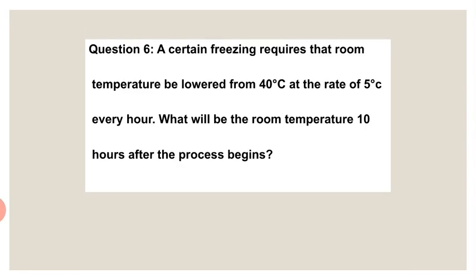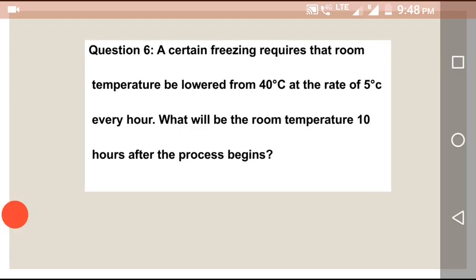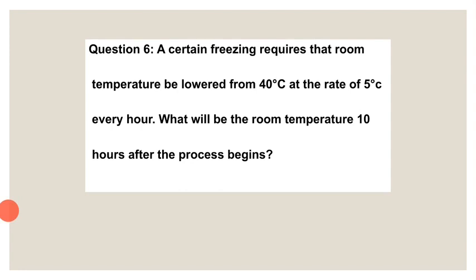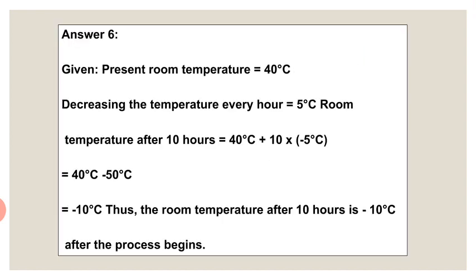Then the sixth sum: a certain freezing process requires that room temperature be lowered from 40 degrees at a rate of 5 degrees Celsius per hour. What will be the room temperature 10 hours after the process begins? You need to write the given present room temperature, the decreasing temperature, then multiply the given numbers to get the solution — this is the room temperature after 10 hours when the degree is reduced.